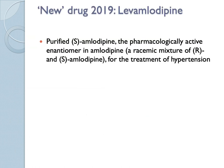A newer drug — levamlodipin — is basically a purified form of S-amlodipine. Amlodipine is a racemic mixture of R and S enantiomers, but the active form is the S one. A Chinese company purified it to create levamlodipin — the S-amlodipine — which basically acts the same way as amlodipine. There are also alpha-1 blockers used in anti-hypertensive treatment, like prazosin and alfuzosin.